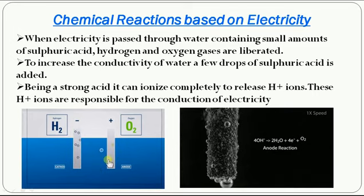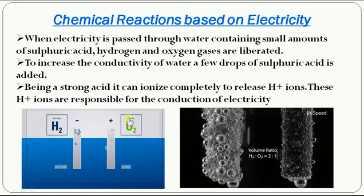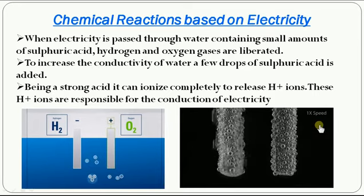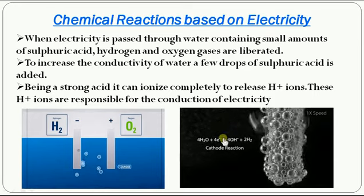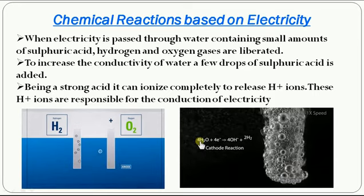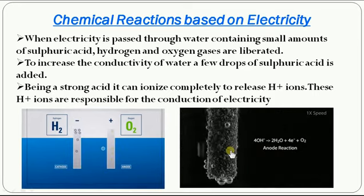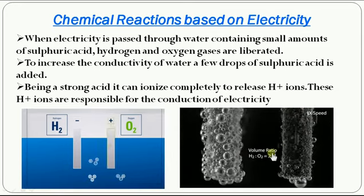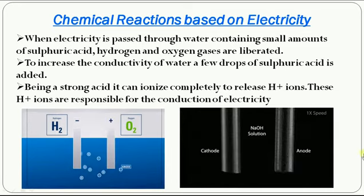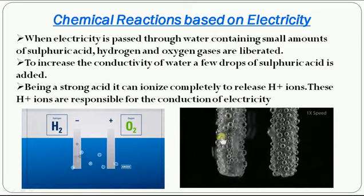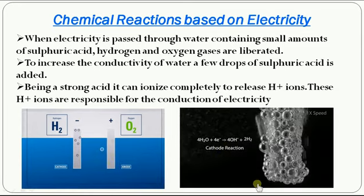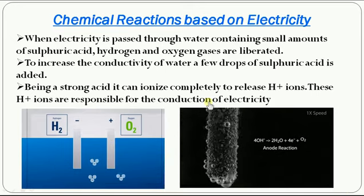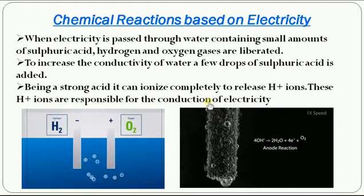Whereas the negative oxygen will move towards the anode and release oxygen gas. In this picture, this is a demonstration of decomposition of water by electricity. At the cathode, you can see a lot of bubbles because when water decomposes it releases a large amount of hydrogen — twice the amount of oxygen. So if hydrogen is two, oxygen will be one. In the cathode we have more bubbles because hydrogen produced in the decomposition of water is more when compared to the oxygen produced. This is a decomposition reaction of water by electricity, and such a reaction happens only by passing electricity.